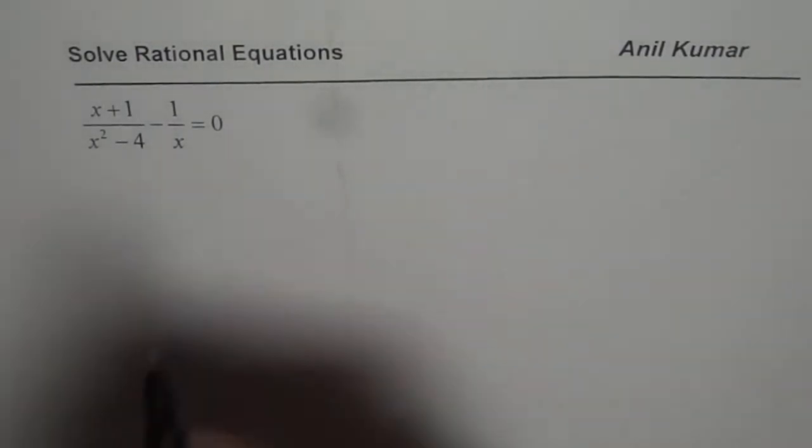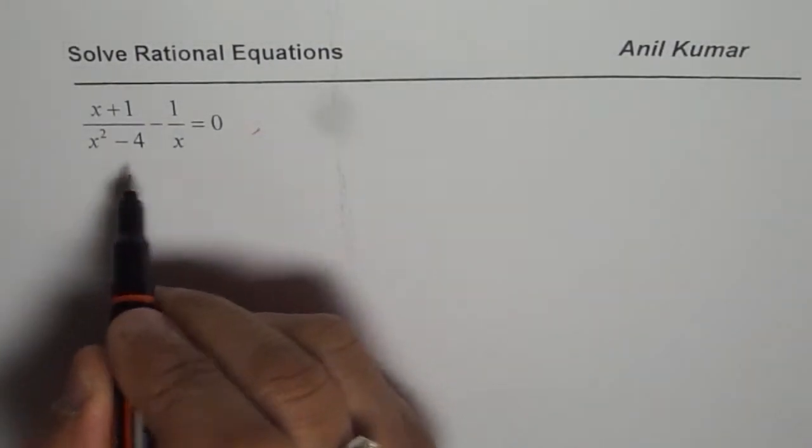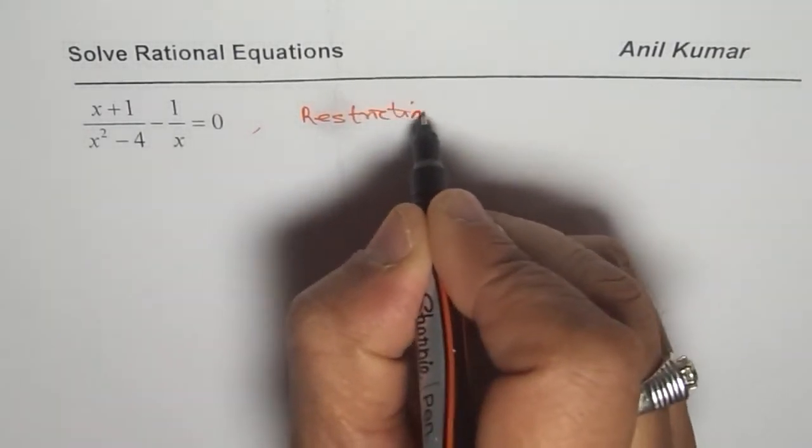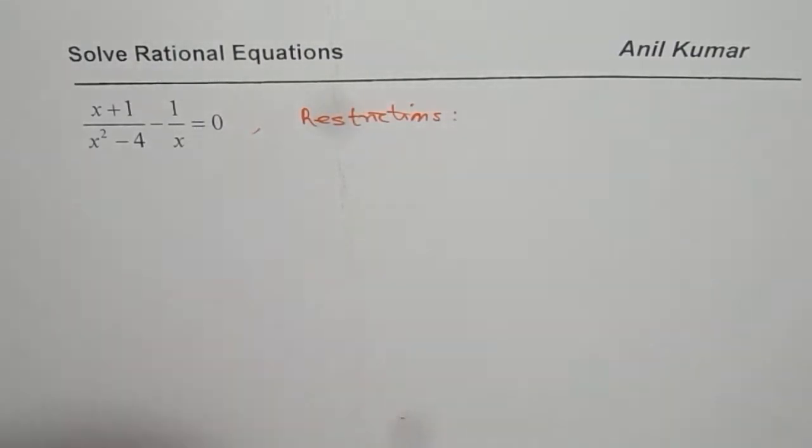So whenever you begin solving rational expressions, start with restrictions. That is very important to understand, right? Now restrictions are that the denominator cannot be 0.